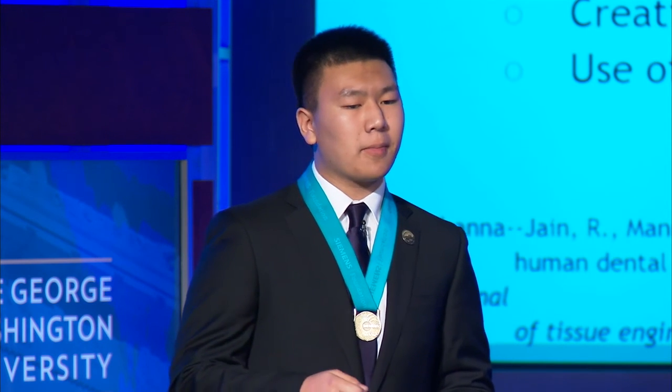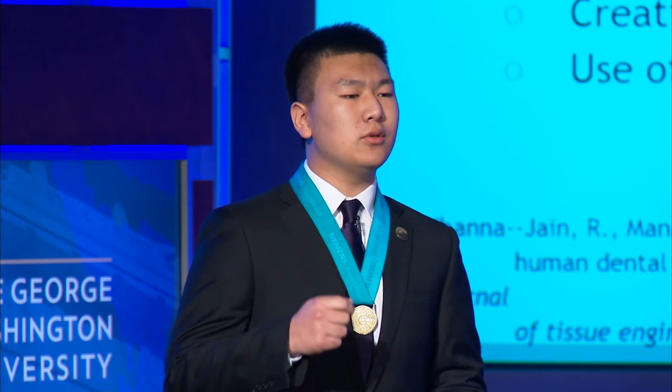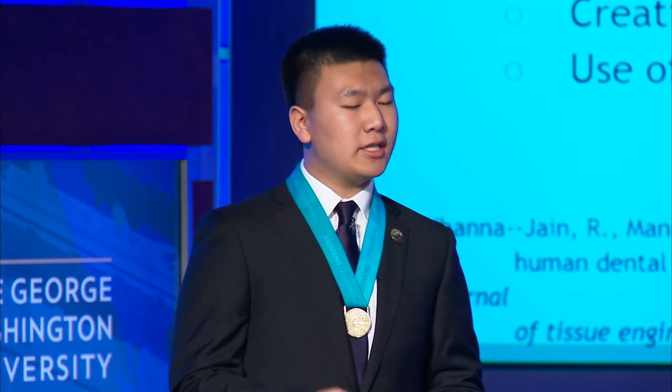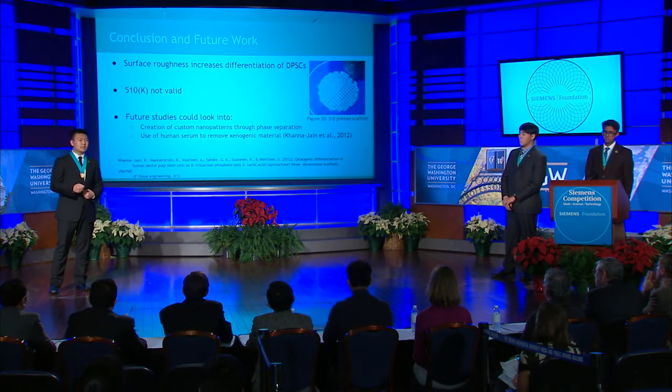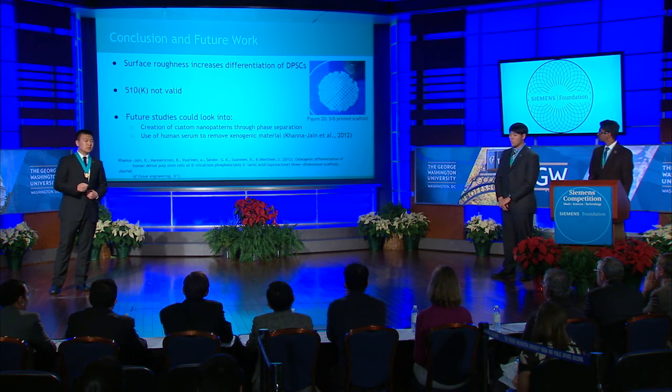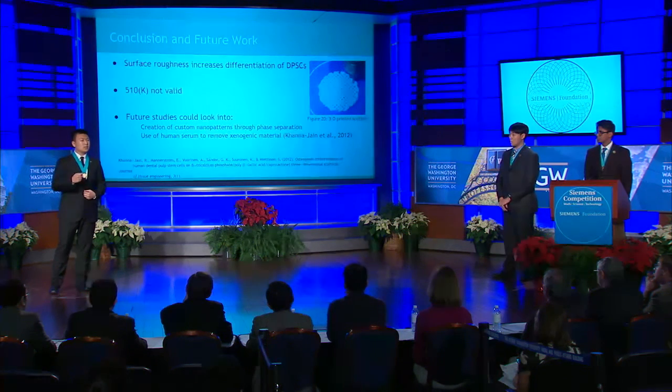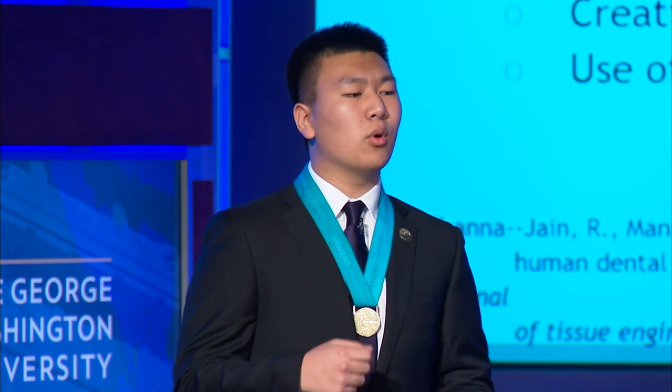In summary, we can conclude that our 3D printed PLA scaffolds increase the osteodifferentiation capabilities of our stem cells. This could be vital in creating a new cost-effective solution to bone implants that can be tailor-made to each patient. Our use of dexamethasone and spun cast scaffolds as positive and negative controls respectively validates our results. Our results also indicated that 510K approval should not be given to our 3D printed PLA scaffolds, as they are vastly different from the current market implementation represented by the spun cast scaffold. Future studies could investigate phase separation of polymethyl methacrylate and polystyrene to create optimal roughness, and could replace fetal bovine serum with human serum to remove xenogenic material and reduce the chance of zoonosis.